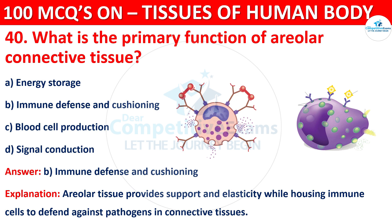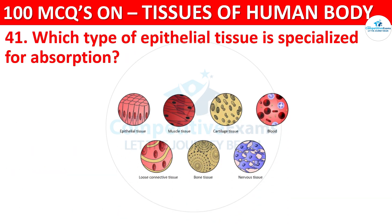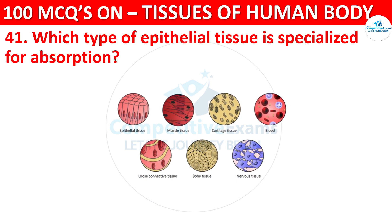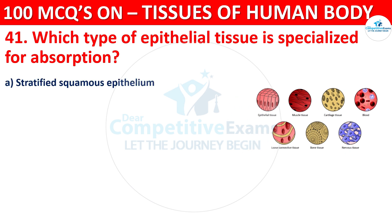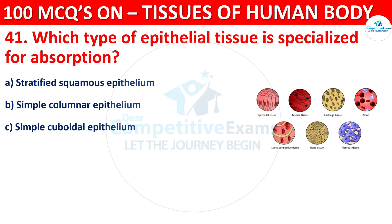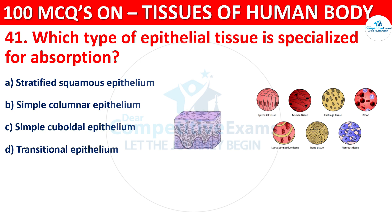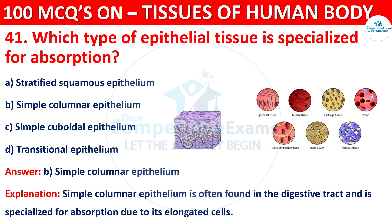Question number 41. Which type of epithelial tissue is specialized for absorption? Options are Stratified Squamous Epithelium, Simple Columnar Epithelium, Simple Cuboidal Epithelium, or Transitional Epithelium. The correct answer is B, that is Simple Columnar Epithelium. It is often found in the digestive tract and is specialized for absorption due to its elongated cells.